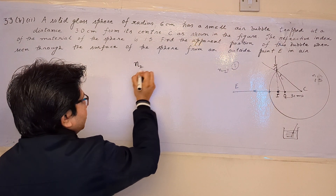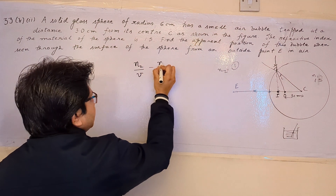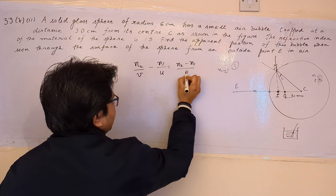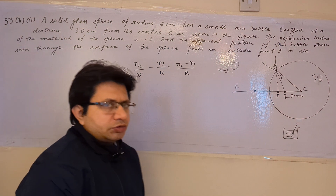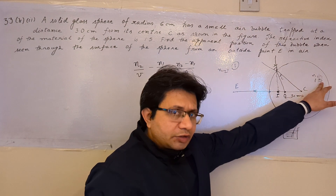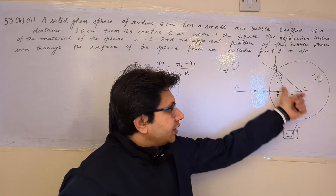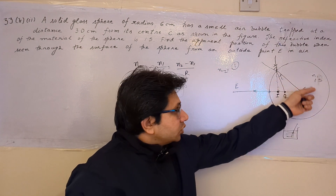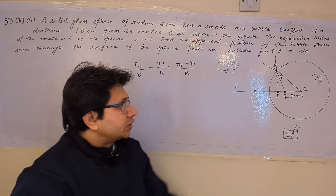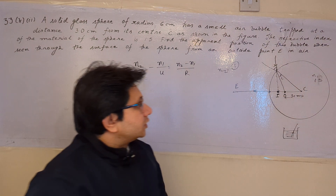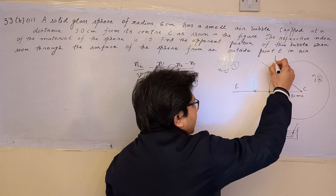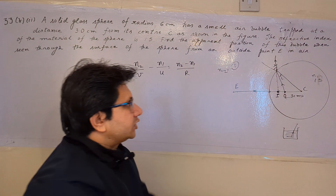To solve this problem, we use the formula: N2/V minus N1/U equals (N2 minus N1)/R. In this formula, N1 is the refractive index of the medium from which the light ray propagates. The light ray starts from the glass medium which has a refractive index of 1.5, so N1 equals 1.5. Since the light ray goes from the glass medium to the air medium, the refractive index of air, which is 1, is taken as N2.